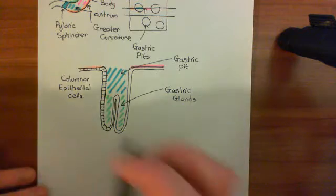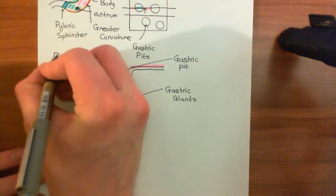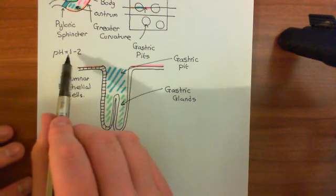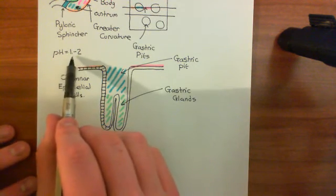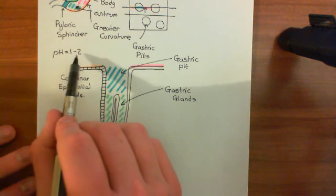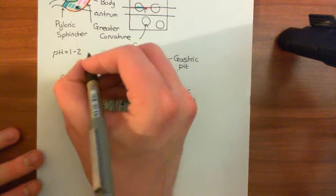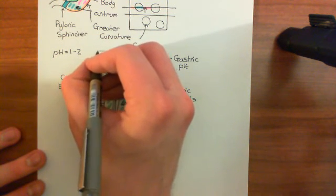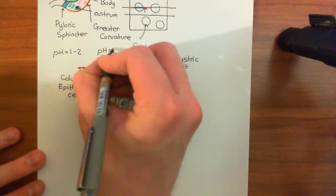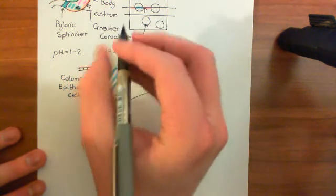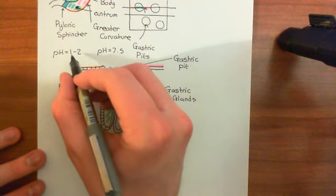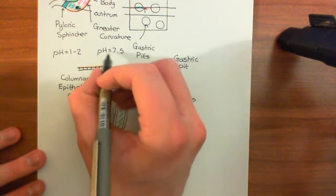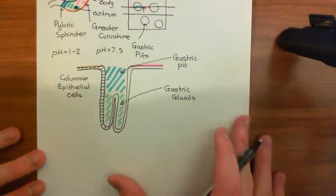The pH of the lumen of the stomach is usually around 1 to 2 — an extremely low pH, meaning it's extremely acidic. Normal physiological pHs are usually around 7.5, so going down to a pH of 1 entails multiplying the concentration of protons by around 1 million.